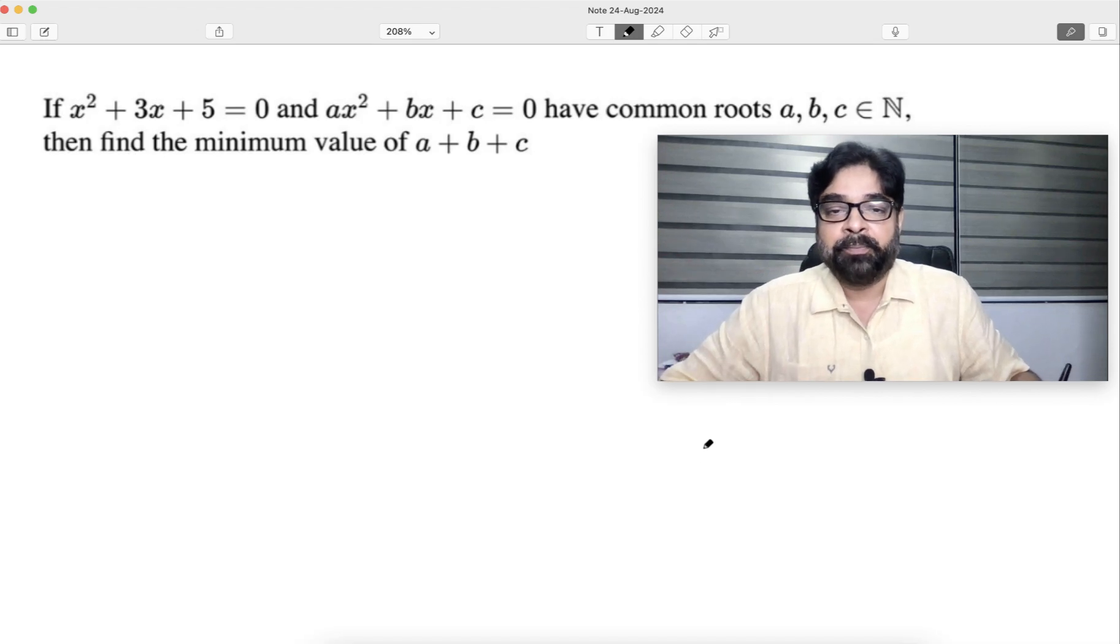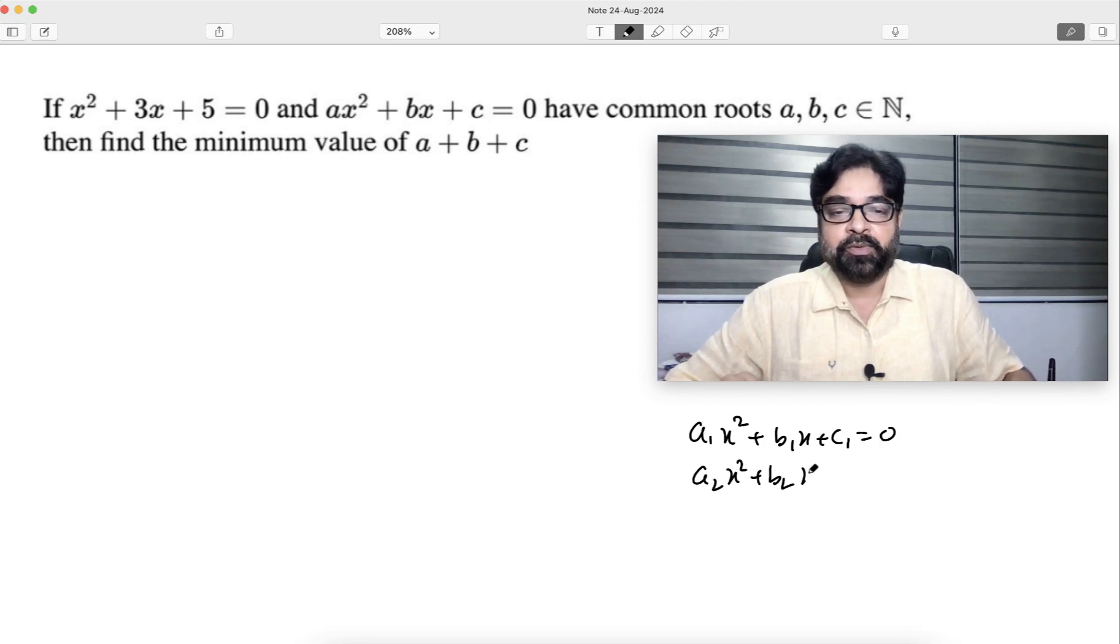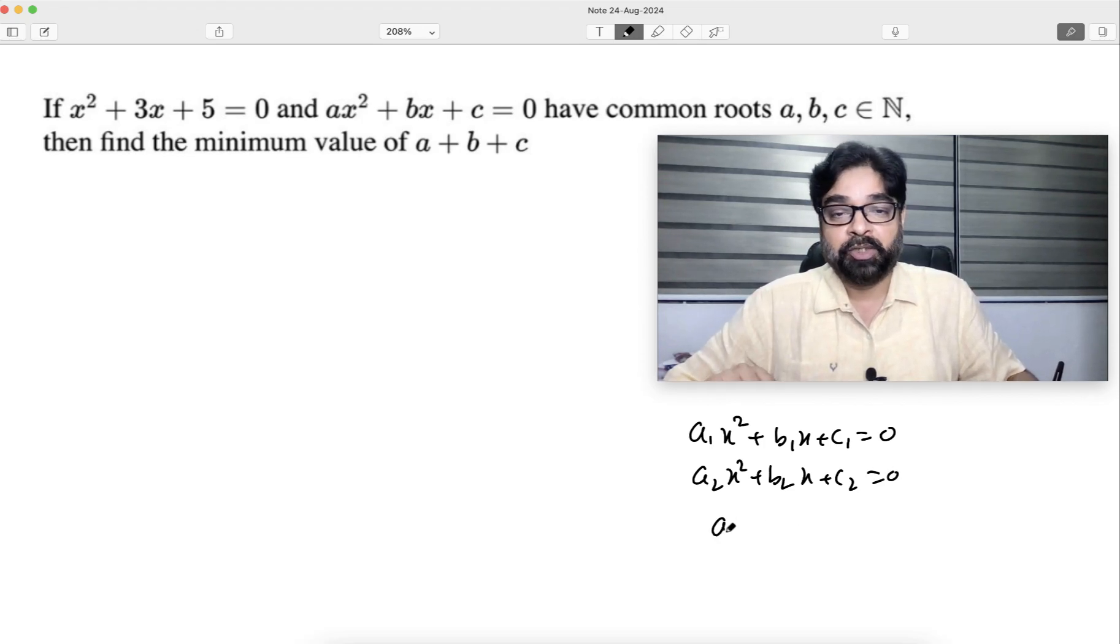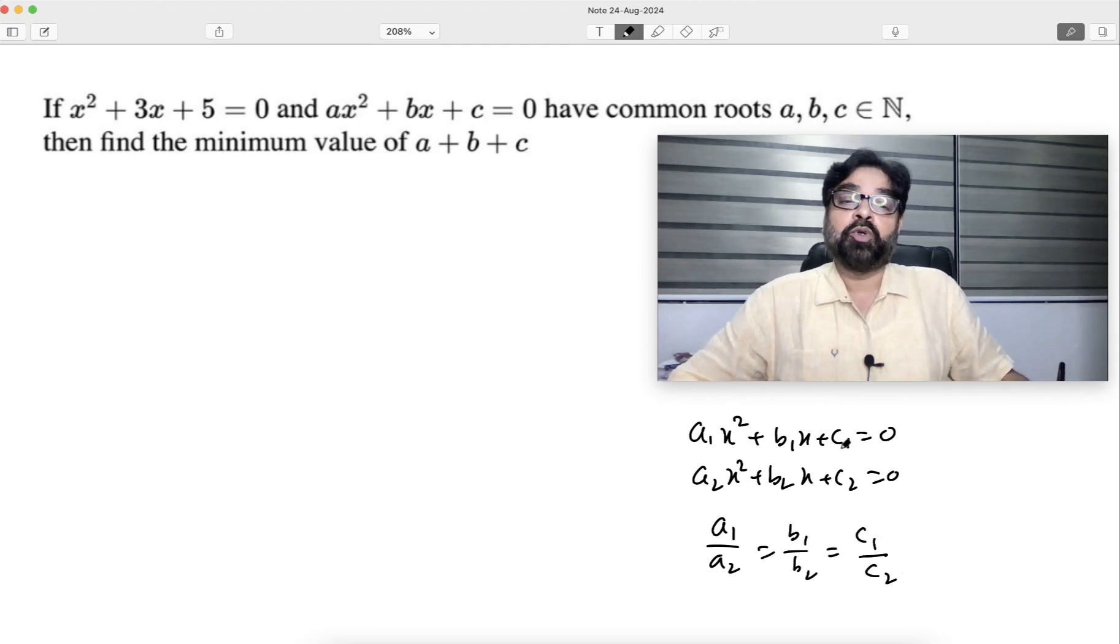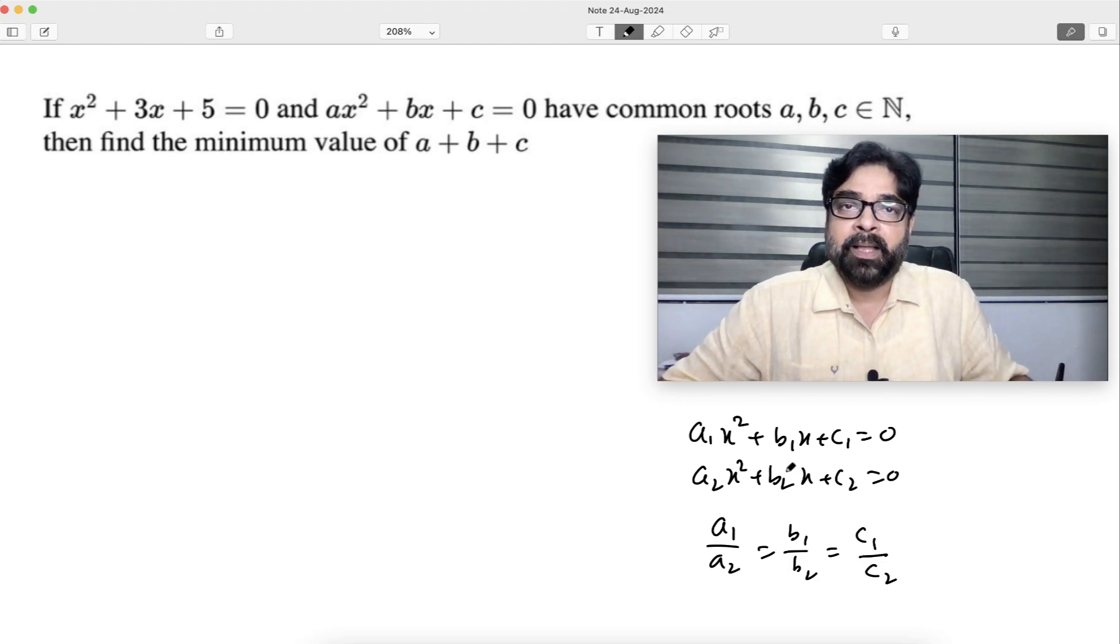First thing, always remember: two equations, ax² + b₁x + c₁ = 0 and a₂x² + b₂x + c₂ = 0. If both the roots are common, the condition is a₁/a₂ must be equal to b₁/b₂ must be equal to c₁/c₂. Why? Because both roots common means basically both equations are same only, right? So this condition will come.